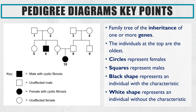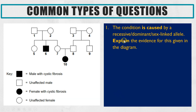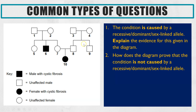So it just speeds you up in an exam knowing that. The types of questions you could get linked to pedigree diagrams: first, you could be told that the condition is caused by a recessive, dominant, or sex-linked allele, and you are asked to pick out a piece of evidence which demonstrates that and then explain how it demonstrates that it is caused by that particular type of allele. Or it could be the reverse — you could be asked to pick out a piece of evidence from the diagram and explain how it proves it is not caused by a sex-linked allele, for example, which is the most common one.